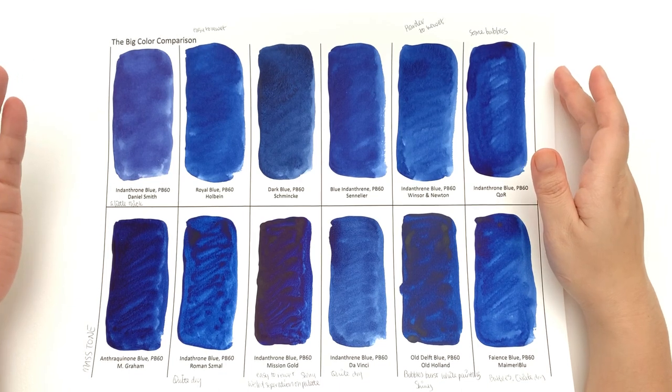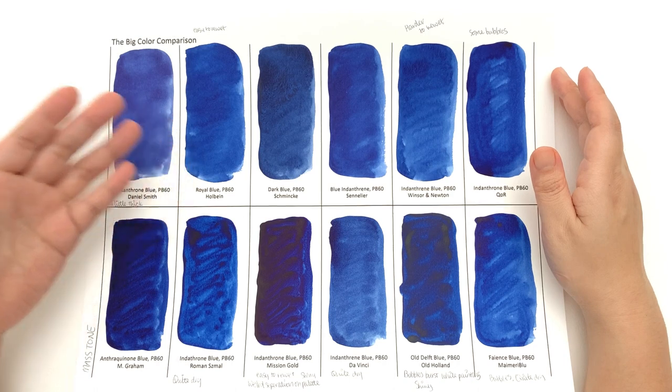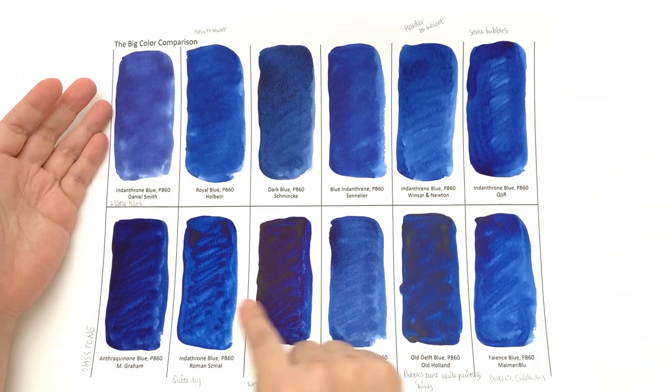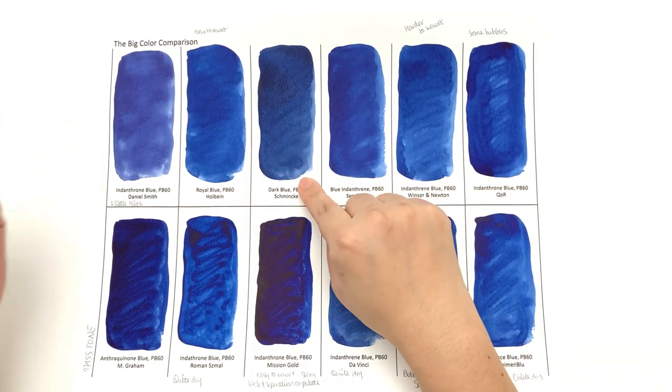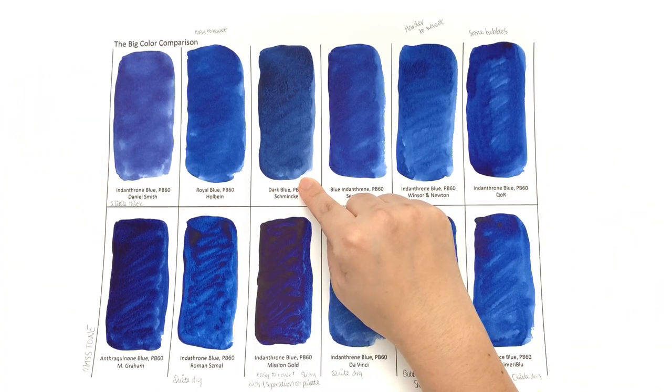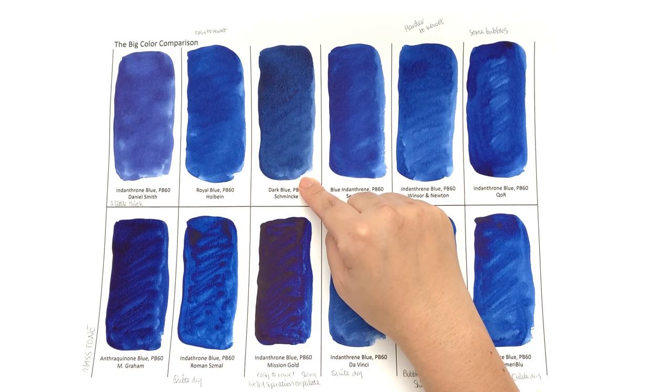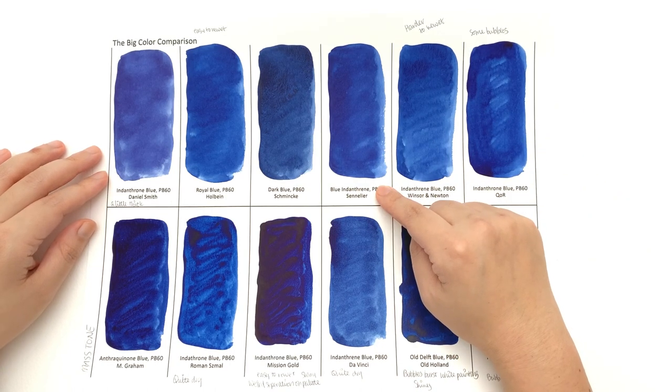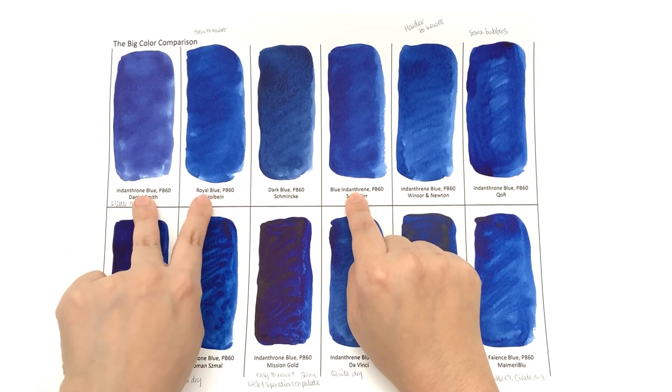The top row is a little bit better. I would say that the smoothest is between the Indanthrone Blue and the Royal Blue - the Daniel Smith one and the Holbein one. Compared to colors like these, these go down much smoother. Schmincke one goes beautifully smooth as well, however it's got that granulation which I was not expecting in a PB60. Sennelier went down pretty well, there's a little bit of patchiness, but these three are the best in terms of going down smoothly.